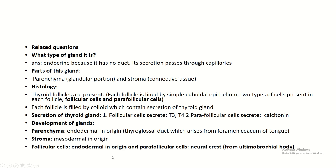The parenchyma of the thyroid gland is developed from endoderm, and the stroma from mesoderm. The follicular cells are developed from endoderm, but the parafollicular cells are developed from neural crest cells, via the ultimobranchial body.